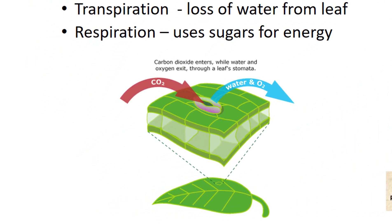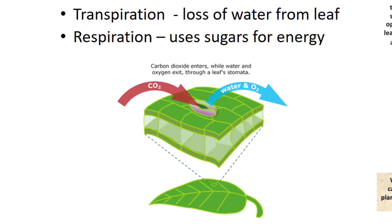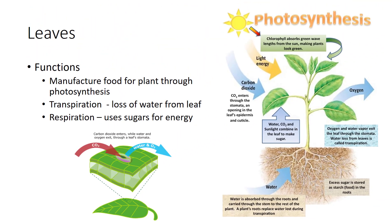Carbon dioxide and other gases enter and exit the leaf through tiny pores in the leaf surface called stomata. Another important function carried out by the leaf is transpiration, which is the loss of water from the leaf in the form of water vapor. Respiration is another important function carried out by the leaf. This process uses sugars made during photosynthesis and breaks them down into simpler molecules, such as water and carbon dioxide, that are used as energy for plant growth and development.